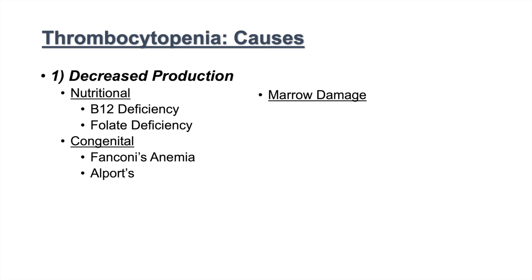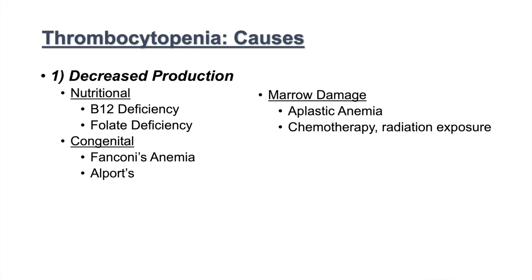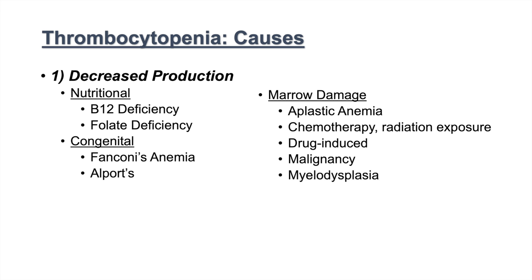There are also issues in the bone marrow itself. Since megakaryocytes are located in the bone marrow, any damage to it can cause decreased thrombocyte counts. These include aplastic anemia, chemotherapy or radiation exposure, and drug-induced bone marrow suppression. Malignancy can also invade the bone marrow, leaving less room for megakaryocyte production and leading to fewer platelets. Myelodysplasia is another condition causing bone marrow problems that leads to thrombocytopenia.